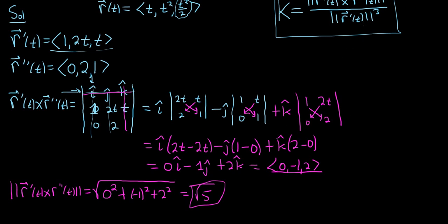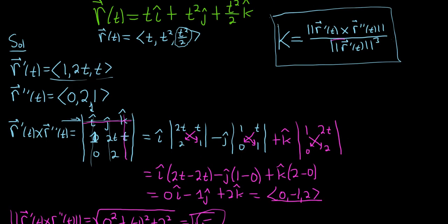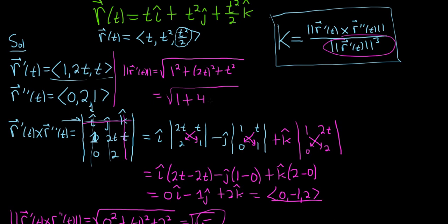On the bottom, we need the magnitude. Let me go back up here and show you. We need the magnitude of the derivative cubed. So the magnitude of the derivative, let's find that. You take the square root and you just square each of the components. So 1 squared plus 2t squared plus t squared. So that would be 1 plus 4t squared plus t squared. So that would be 1 plus 5t squared. So then we cube that and that goes in the bottom.